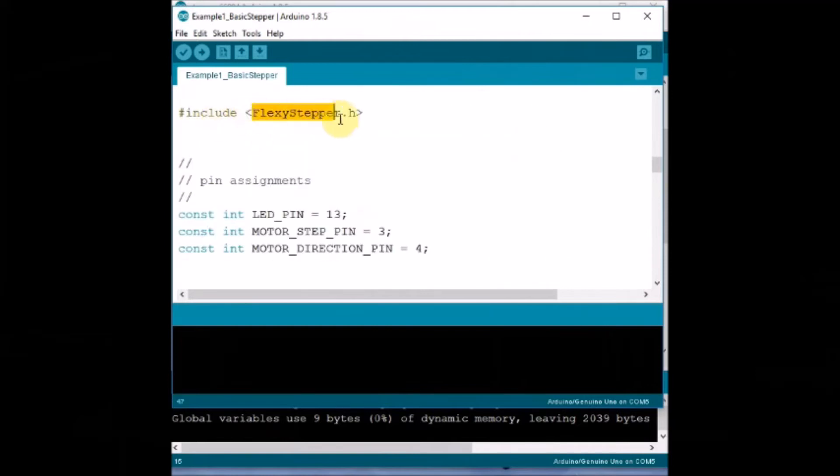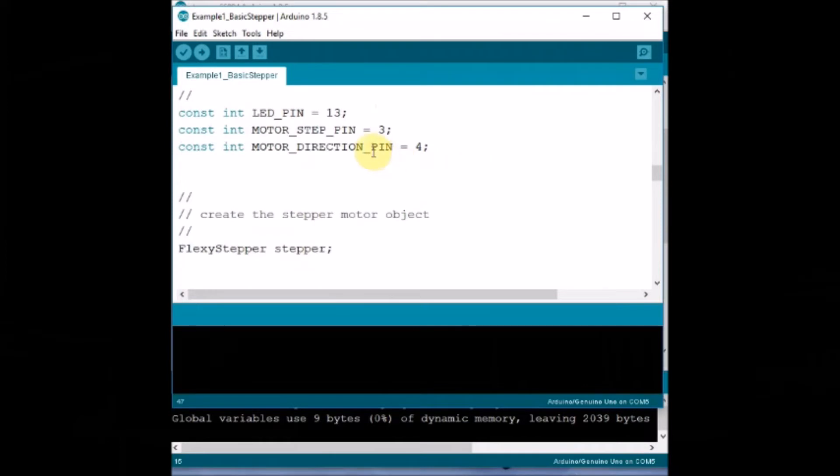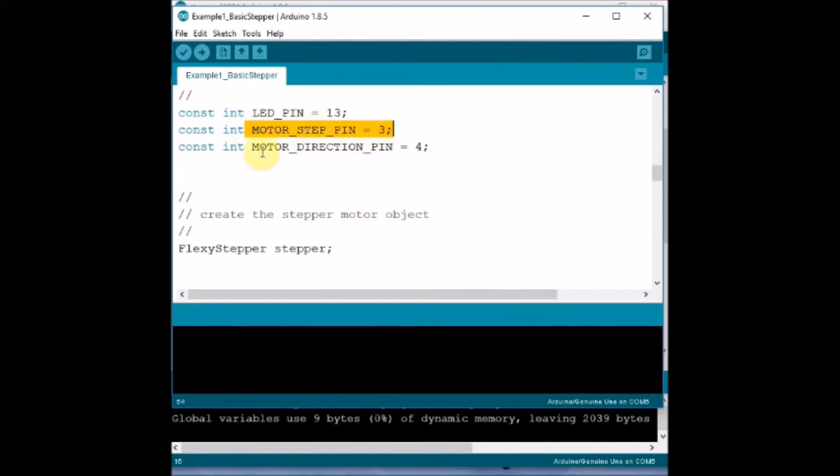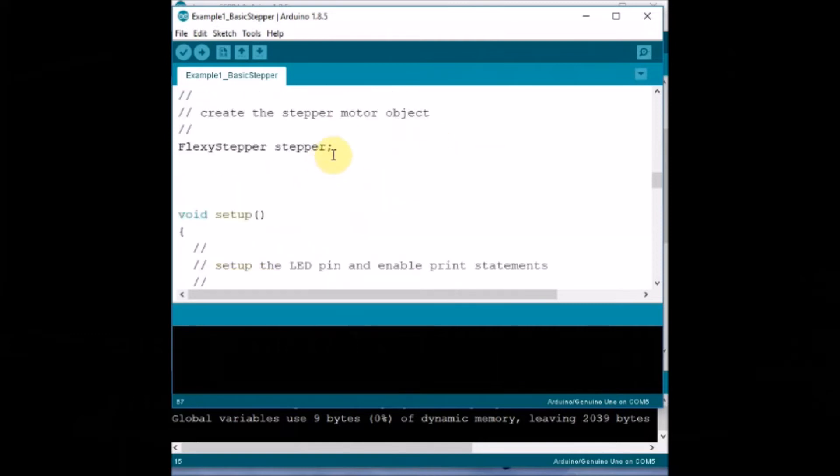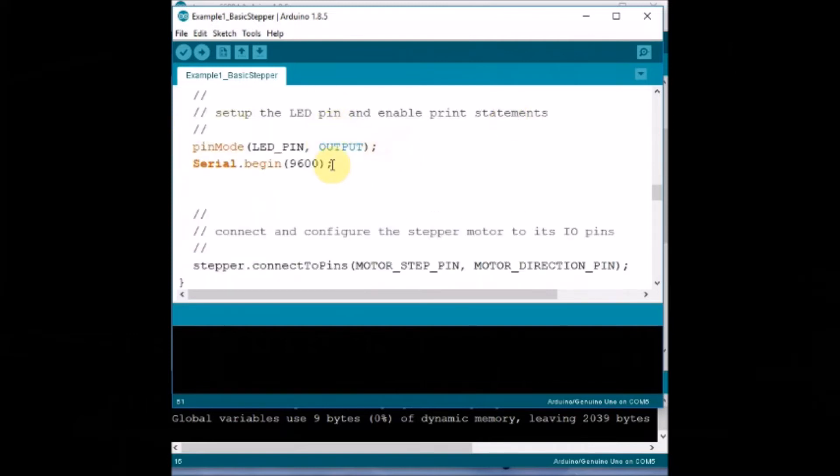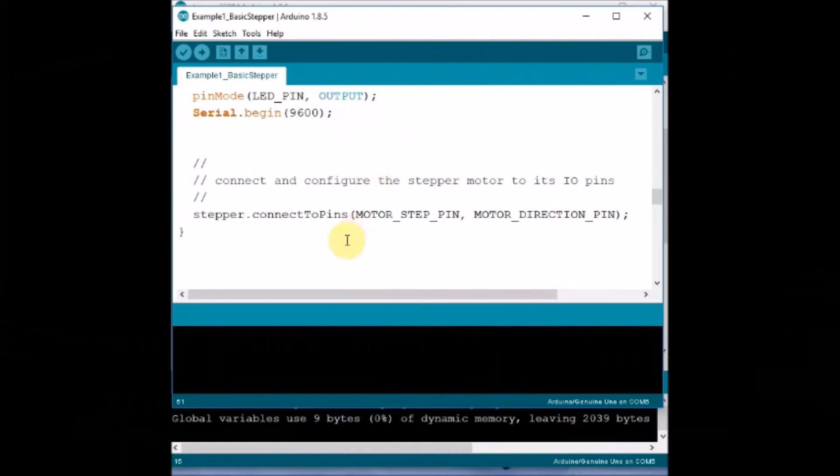Enable pin we can pull high or leave it as it is. It is working without enable pin also. Now create a stepper motor object, Flexi stepper named as stepper. And then we use the class connect to pins and pass on the parameter step and direction pin.